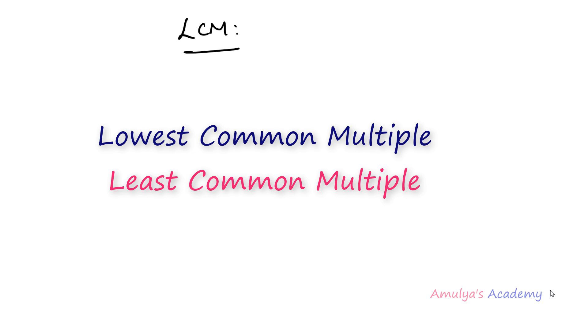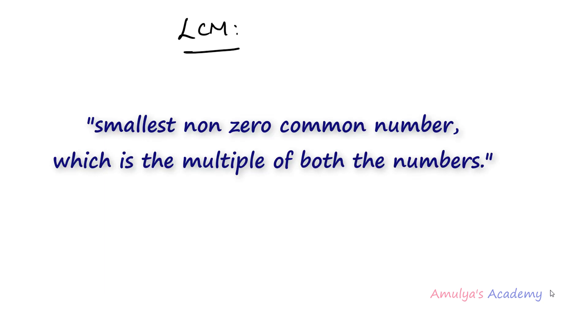Hello guys and welcome to Python programming tutorials by Amulyas Academy. Today in this tutorial we will write a program to find out the LCM of two numbers. Here LCM stands for lowest common multiple or least common multiple. The LCM of two numbers is the smallest non-zero common number which is a multiple of both the numbers.